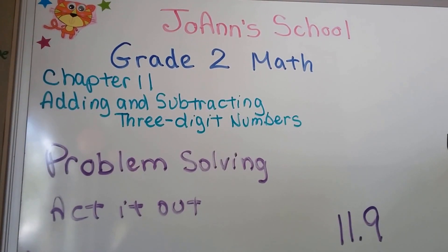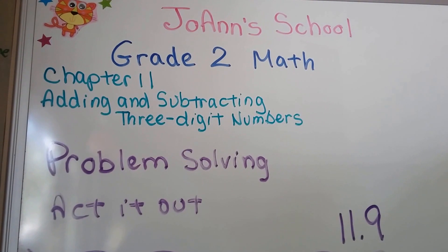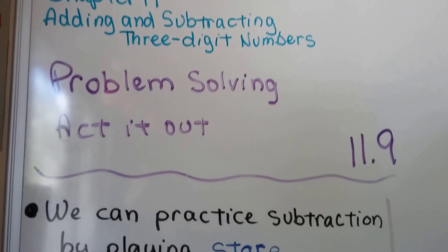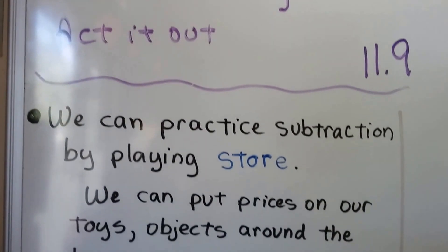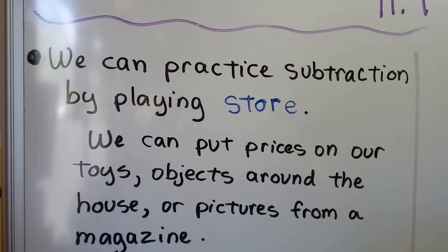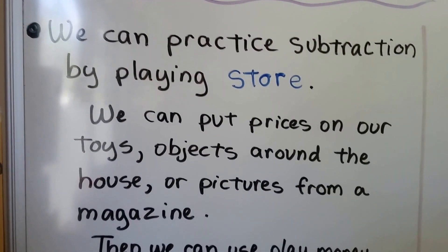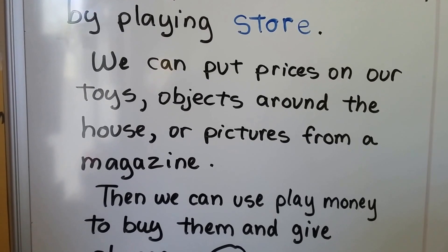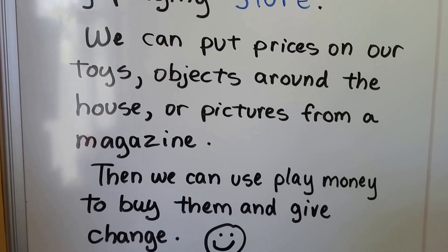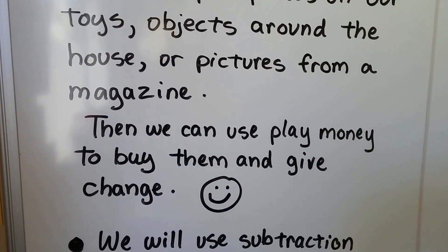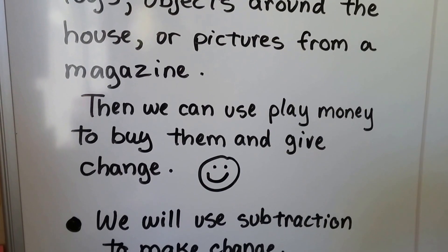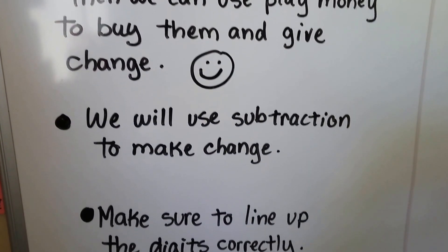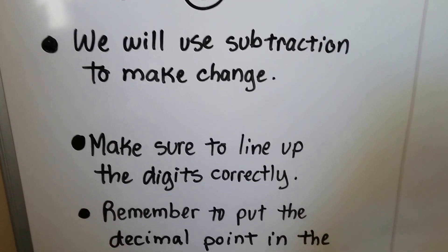Problem solving acted out, lesson 11.9. We can do problem solving by acting something out and practice subtraction by playing store. We can put prices on toys, objects around the house, or even pictures from a magazine. Then we can use play money to buy them and give change. We'll use subtraction to make change.